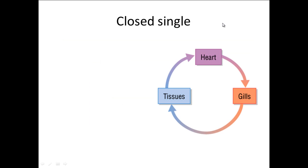Here's our closed single transport system. You've got three parts to it: you've got the body tissues, you've got the heart and you've got the gills. So this is obviously a transport system that's within fish.